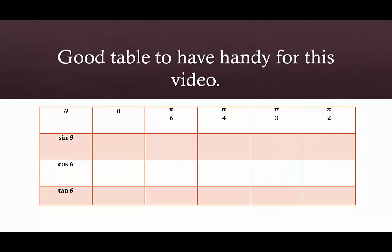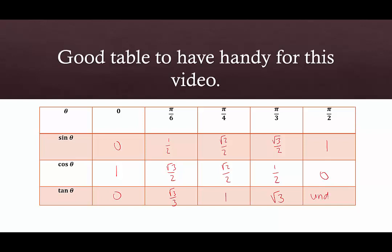The next table that's really good to have handy — I suggest you write it down or memorize it — is sine, cosine, and tangent of various radian measures. Sine of 0 is 0; sine of pi over 6 is 1/2; sine of pi over 4 is root 2 over 2; sine of pi over 3 is root 3 over 2; sine of pi over 2 is 1. Cosine is like the reverse: cosine of 0 is 1, cosine of pi over 6 is root 3 over 2, cosine of pi over 4 is root 2 over 2, cosine of pi over 3 is 1/2, cosine of pi over 2 is 0. For tangent: tangent of 0 is 0, tangent of pi over 6 is root 3 over 3, tangent of pi over 4 is 1, tangent of pi over 3 is square root of 3, and tangent of pi over 2 is undefined.